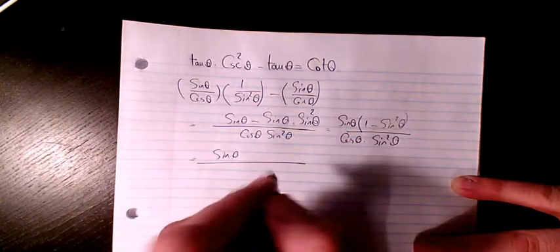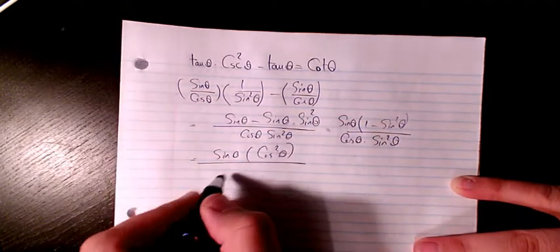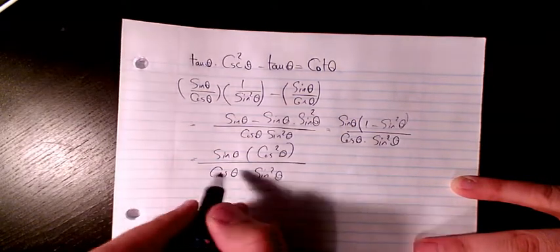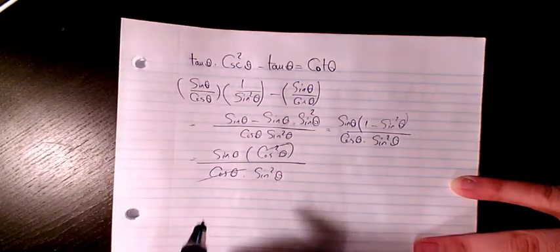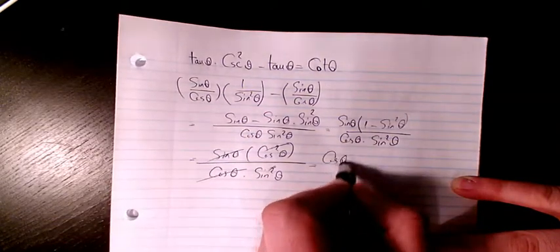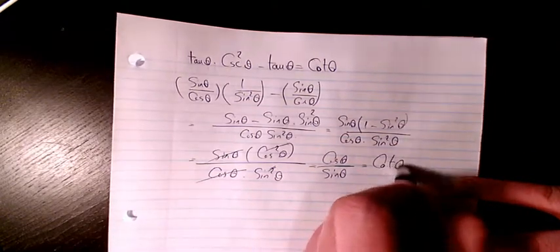Then inside the bracket I have one minus sine squared theta. I change it to cosine squared theta. In the denominator I have cosine theta times sine squared theta. Cosine and this one cancel out, sine the exponent and this one cancel out. Cosine theta divided by sine theta will be equal to cotangent theta.